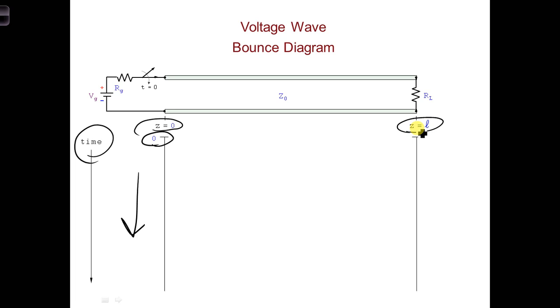Our bounce diagram starts at t equals 0 at the upper left corner. What happens at t equals 0? The switch closes and we get our first V1 plus wave. So let's draw a line representing the leading edge of the V1 plus wave, propagating along the entire transmission line.